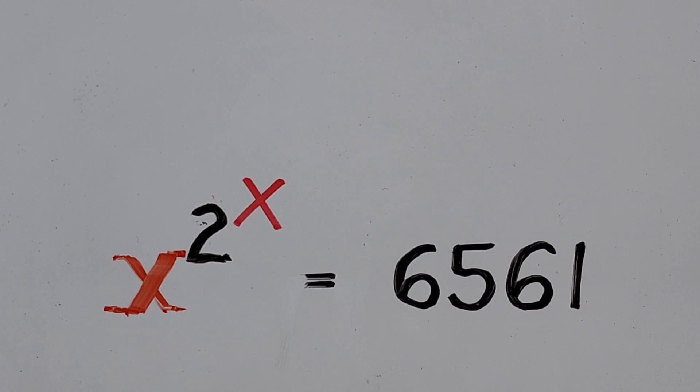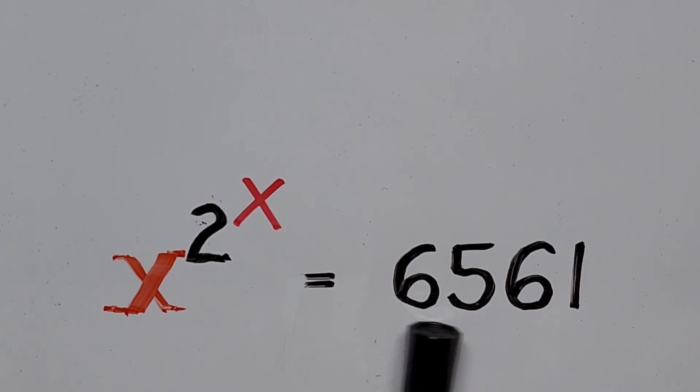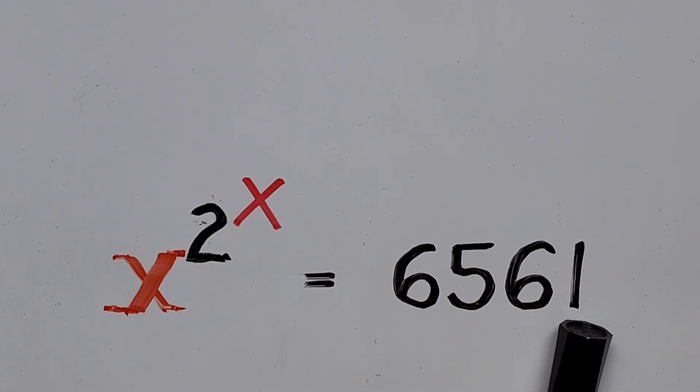Let's do it this way. First we focus on the constant right hand side of the equation, 6561. If you take a look at the digits, this number is actually divisible by 3. Did you know that? It is because the sum of the digits is divisible by 3, since 6 plus 5 is 11, plus 6 is 17, plus 1 is 18. So it is divisible by 3 since 18 is divisible by 3.